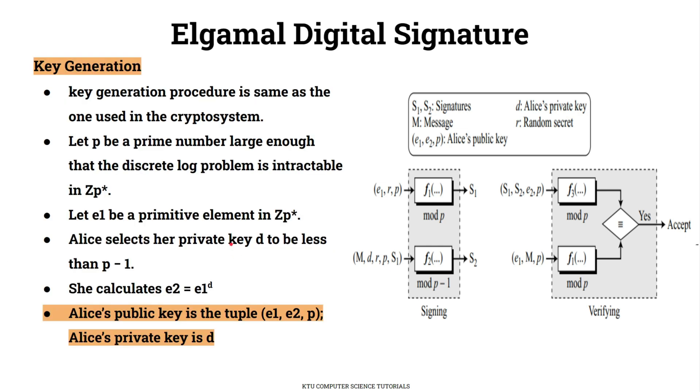Now we are discussing the key generation process. P will be a large prime number.